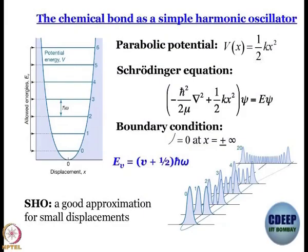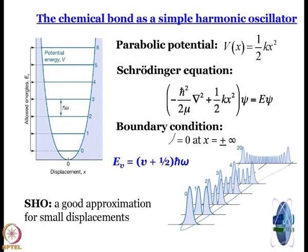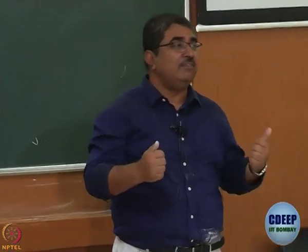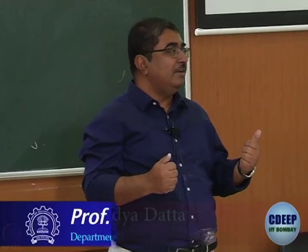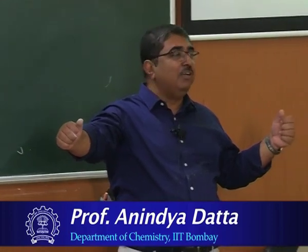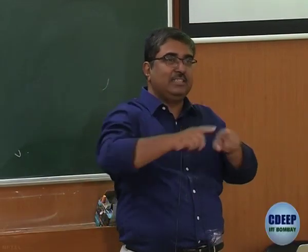Now we move on to the next part of our discussion of vibrational spectroscopy. So far we had worked with the assumption that the potential is (1/2)kx², the bond behaves like a harmonic oscillator. But as you understand, especially for diatomic molecules, the bond cannot behave like a harmonic oscillator, because if that were the case, even when x is infinity the bond would not break — it's a parabola, it just keeps going up.